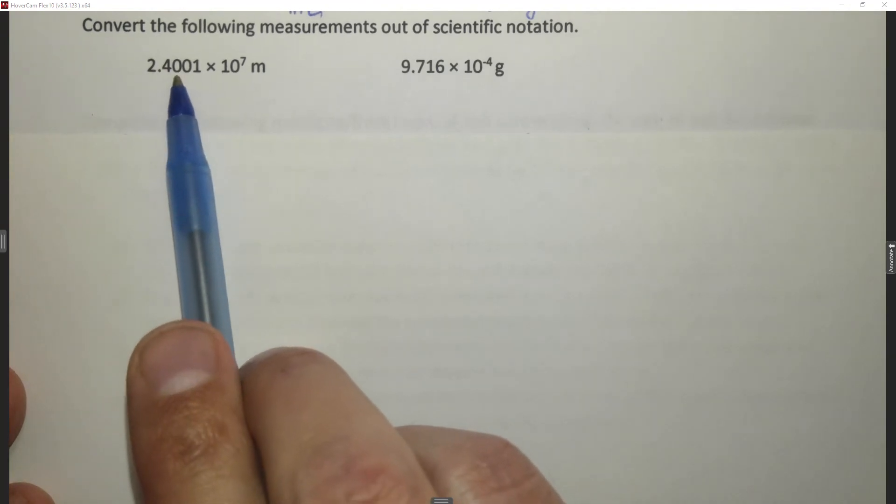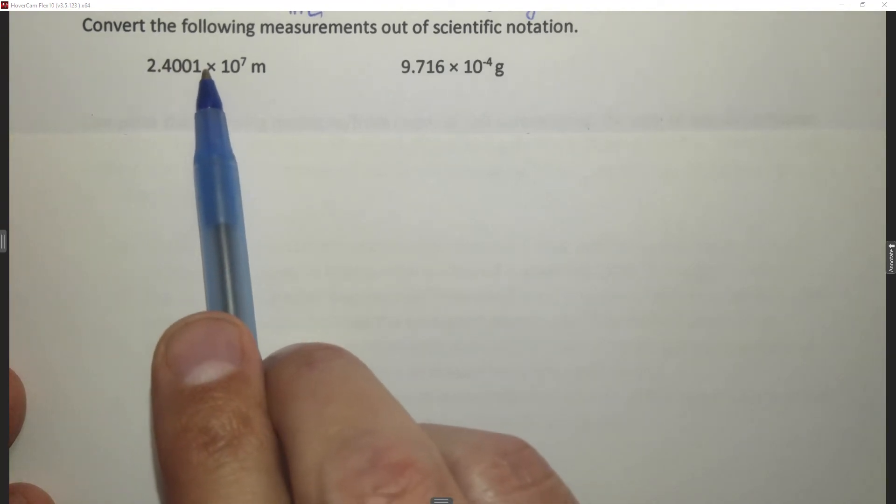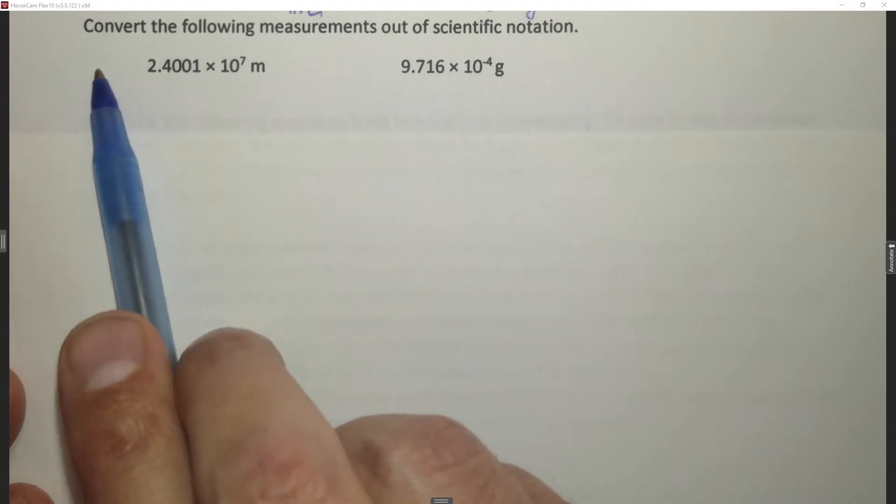Said another way we want to move the decimal place this way to make the number larger. If you move it this way it's going to make it smaller than 1. So in order to do that what I'm going to first do is write 2.4001.